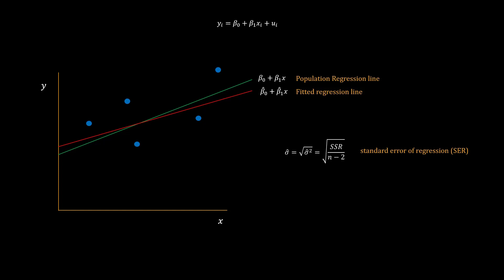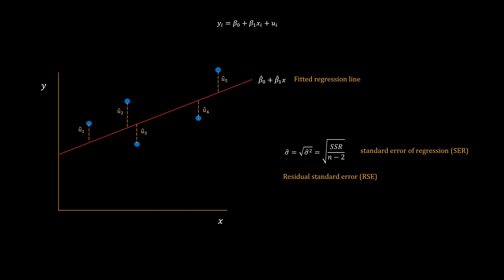One way to measure the quality of the fit is to look at the standard error of regression. Sometimes SER is also called RSE, which stands for residual standard error, which is the estimated standard deviation of the error terms. For a better fit we would expect the residuals to be smaller, and so the RSE would also be smaller. RSE is the measure of average deviation of Y from the regression line. Note that even if the estimates are very good and close to the true population parameters, we still have to live with RSE and we can never perfectly predict Y given X.